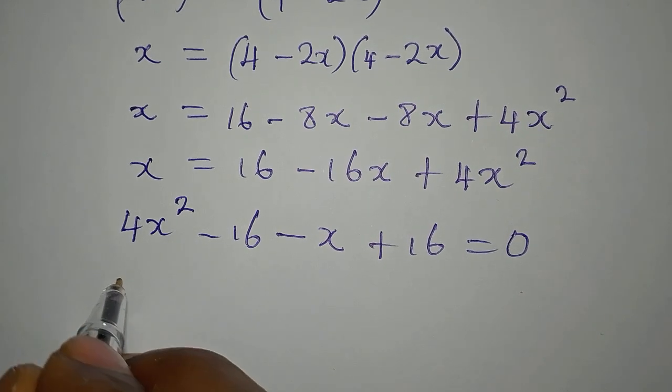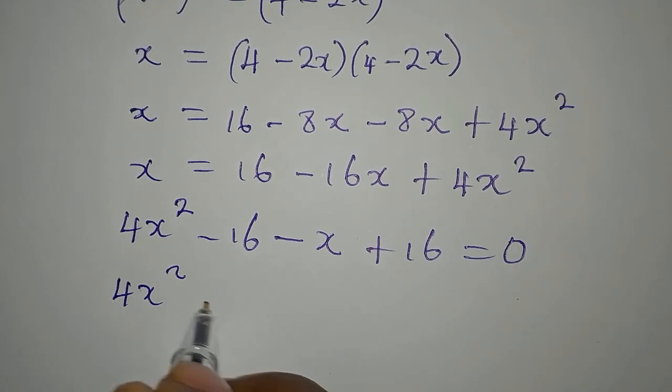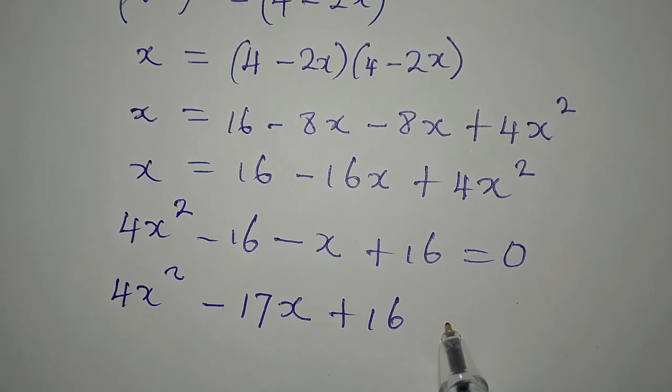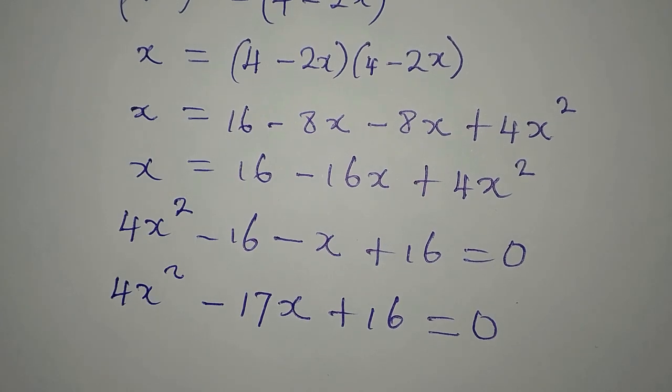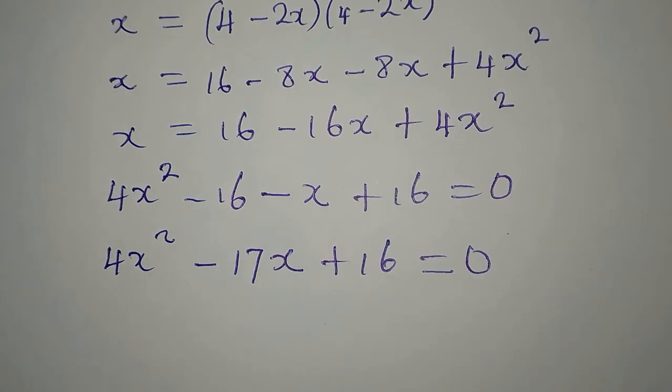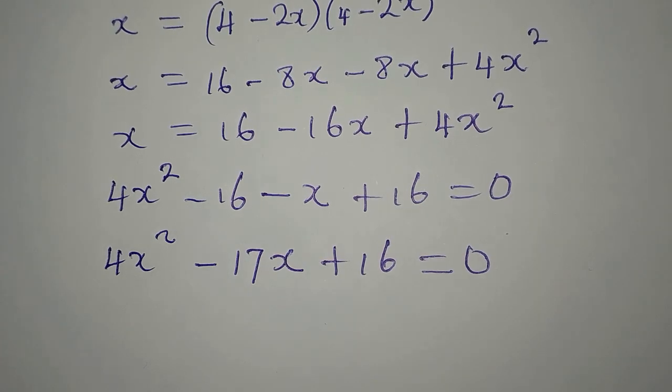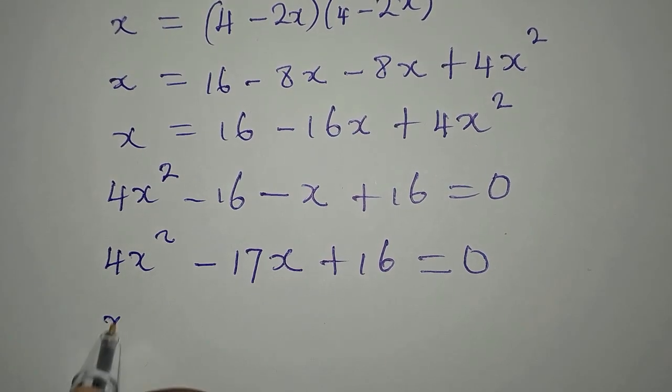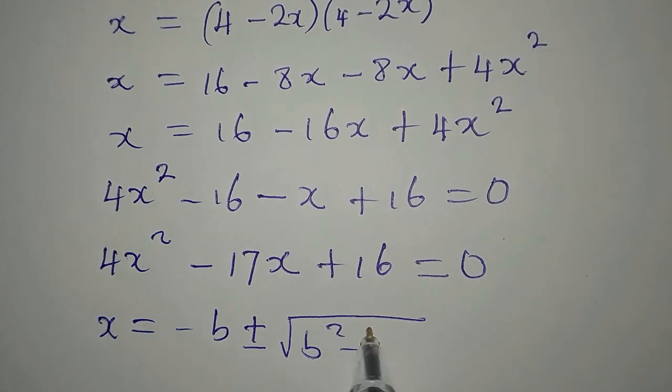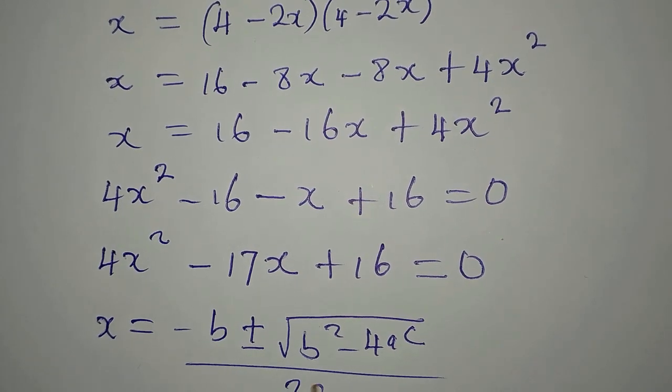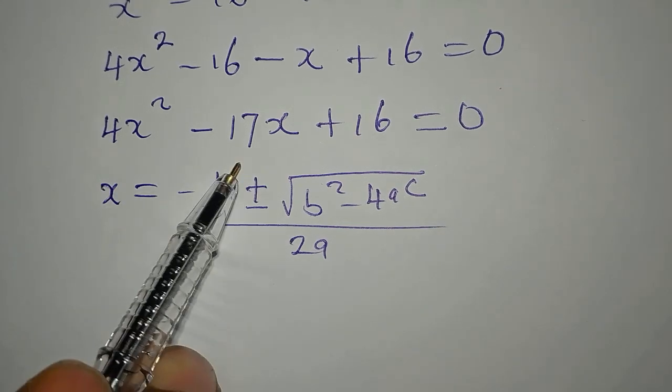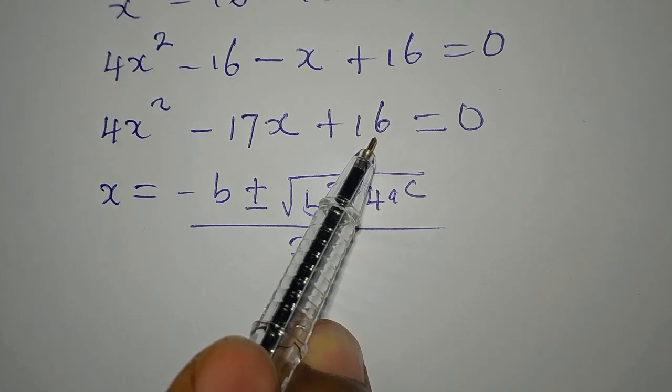If you do not know, this is a quadratic equation, so we have 4x squared minus 17x plus 16 equals zero. So how do we solve this problem? We are going to use the formula method for this, and x is equal to minus b plus or minus the square root of b squared minus 4ac, everything is over 2 times a. Now our a is 4, b is minus 17, c is 16.